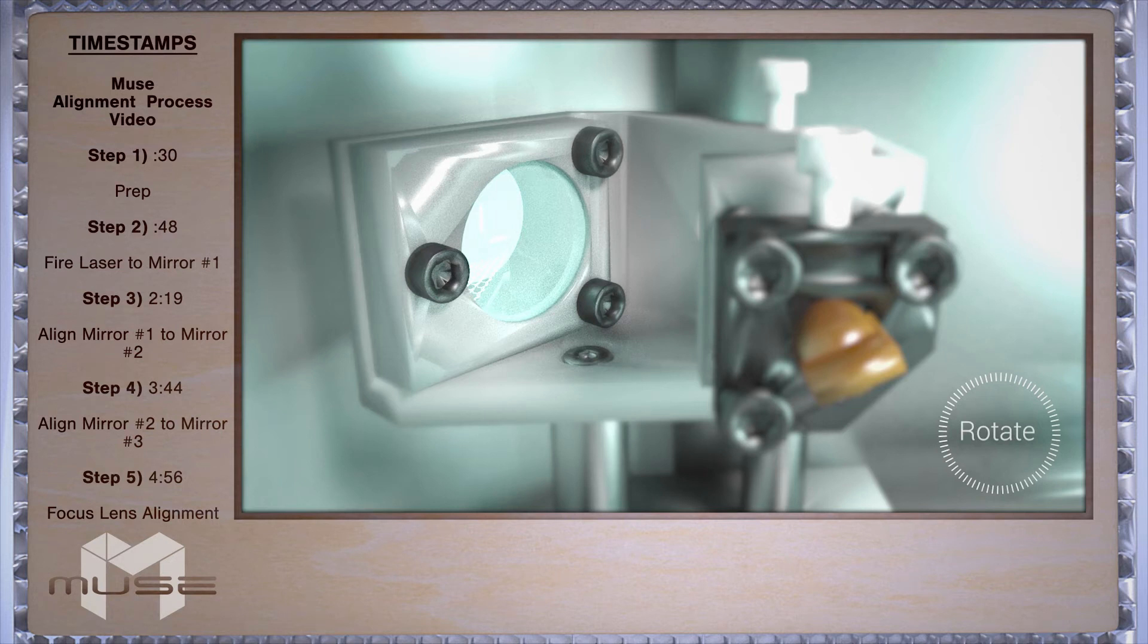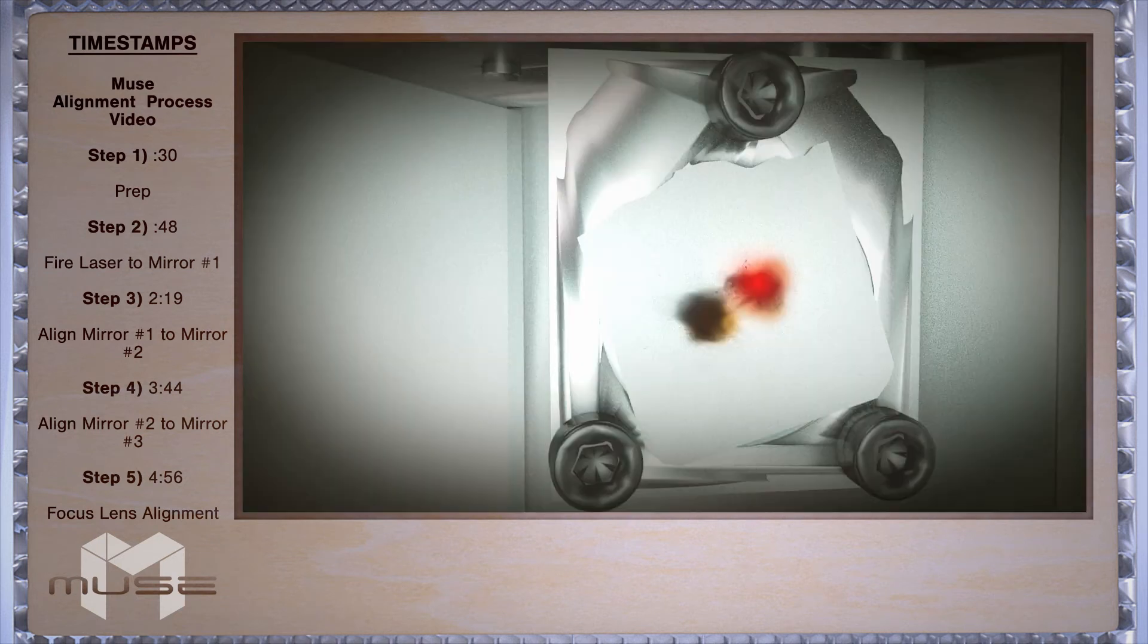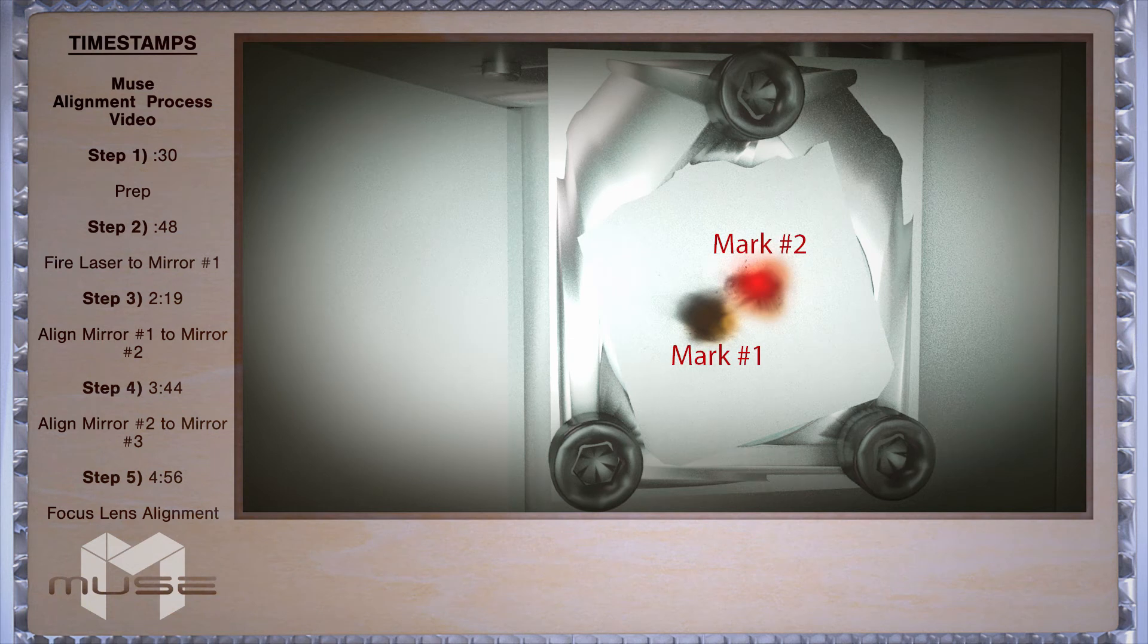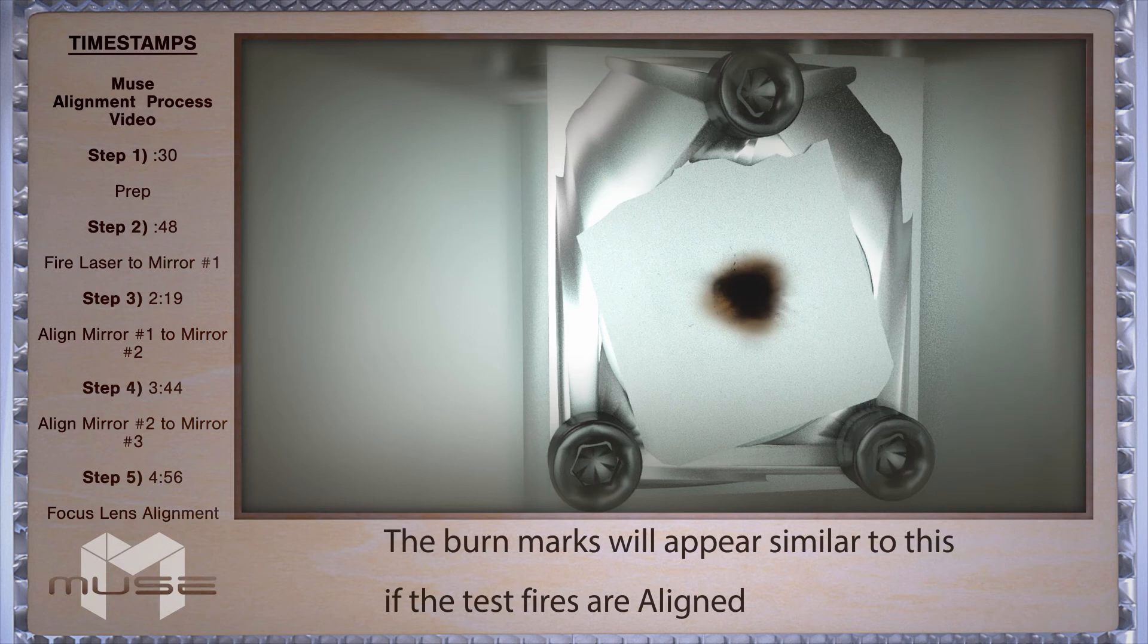This uses the same principles with the three screws coordinating together. Carefully adjust mirror one until the second mark on your thermal paper is under the red dot. Repeat this process until the two burn marks are on top of each other as close as possible and then you can move on to the next step.